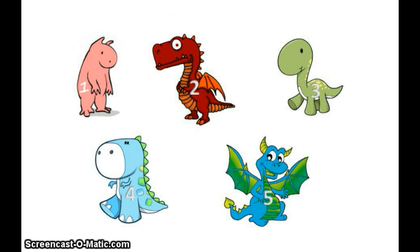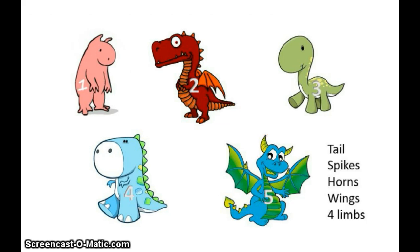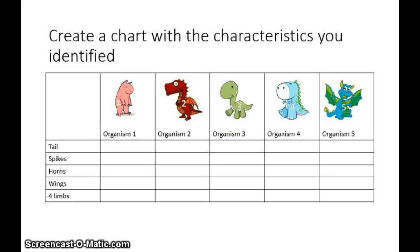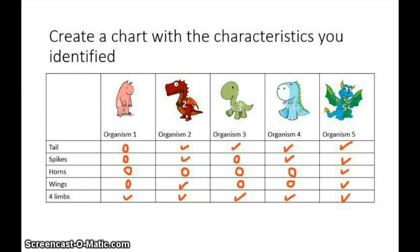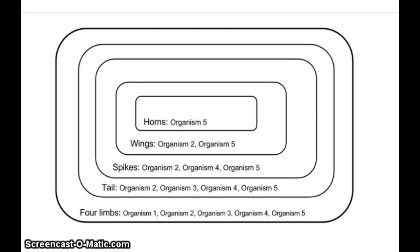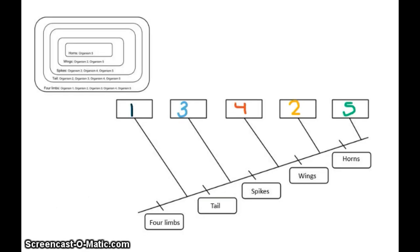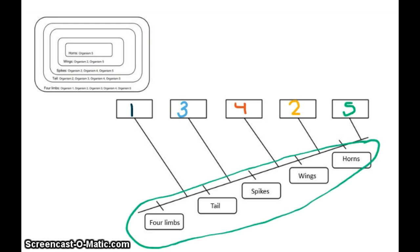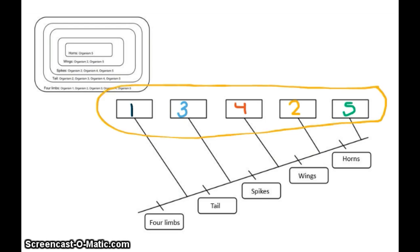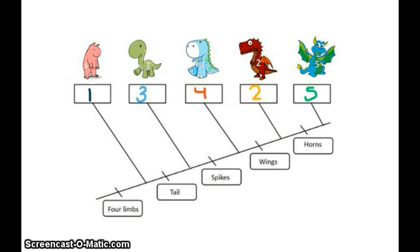In short, to create a cladogram, you first identify characteristics. Create a data chart and fill it in. Use the data chart to create a Venn diagram of nested characteristics. And finally, use the Venn diagram to create the cladogram. Remember, you start with the shared characteristics, which go along the side, and the organisms, which go at the top, are added last. And that is how you build your own cladogram.